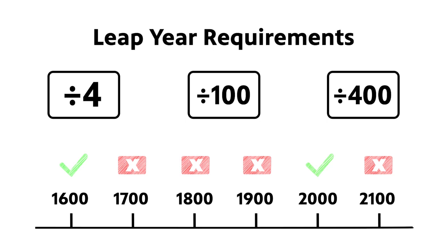So all three of those corrections make the mathematical adjustments so that we can stay steady across our year, and winter is always when we think it's going to be.